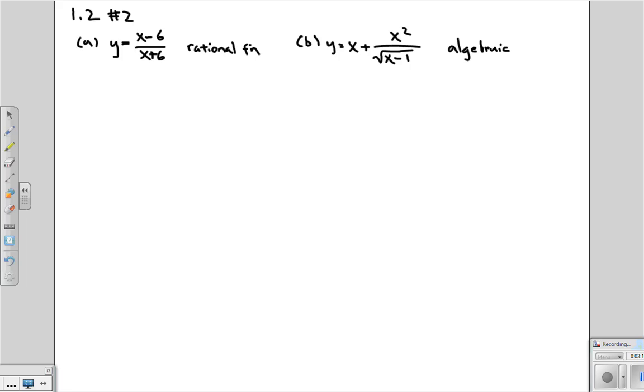Part C, y is equal to 10 to the x. Now remember, the big difference between power functions and exponential functions is where is the variable. For power functions, the variable is in the bottom. The exponential functions has the variable in the exponent. So in this case, x is, of course, an exponent. It's our variable. Therefore, it's not a power function, but rather is an exponential function.